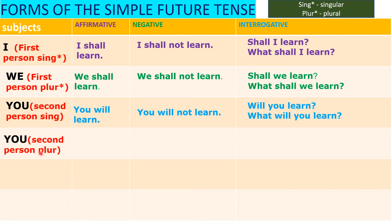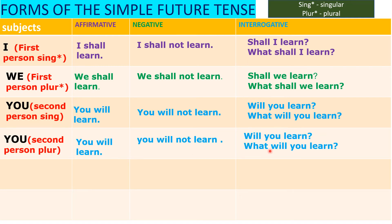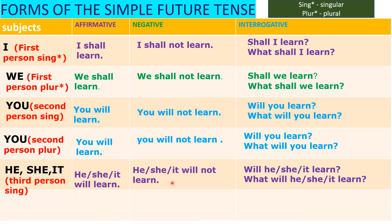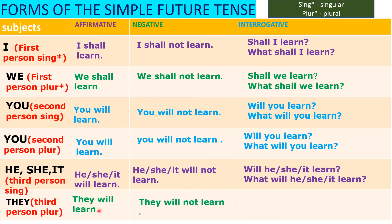Second person plural — you will learn. Third person singular: 'He will learn,' 'She will learn,' 'It will learn.' Negative: 'He will not learn,' 'She will not learn,' 'It will not learn.' Questions: 'Will he learn?' 'What will he learn?' Third person plural: 'They will learn.' 'They will not learn.' 'Will they learn?' 'What will they learn?'